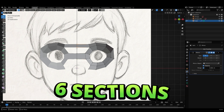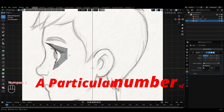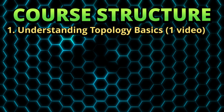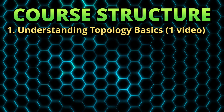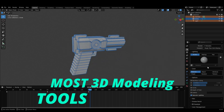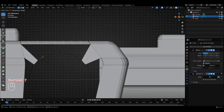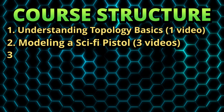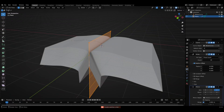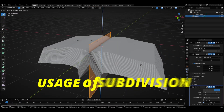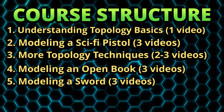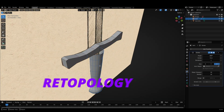This complete course will have a total of six sections, and in each section we'll have a particular number of chapters. The first section has just one chapter, which is this current video explaining the basics of topology and the core structure. Then in the second section, we'll model a sci-fi pistol to understand most 3D modeling tools and techniques and how hard surface modeling is done. In section three, we'll discover more topology techniques. In section four, we'll model an open book and cover the usage of subdivision and how it affects topology. In section five, we'll model a sword in Blender and use it to understand re-topology and how it is done.